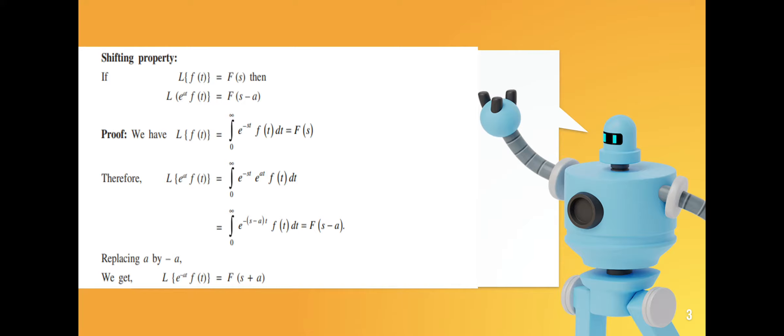Shifting property: if the Laplace transform of f(t) equals F(s), then the Laplace transform of e^(at) times f(t) equals F(s minus a).